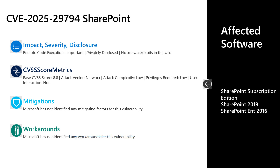The final vulnerability I'll talk to today moves out of Windows and into Office — specifically a SharePoint vulnerability. This is CVE-2025-29794, an important remote code execution vulnerability rated 8.8 on the CVSS scale. The attack vector is over the network, the attack complexity is low, low privileges are required, and no user interaction is required to leverage this. There are no documented mitigations or workarounds. Affected software includes SharePoint Subscription Edition, SharePoint 2019, and SharePoint Enterprise 2016.